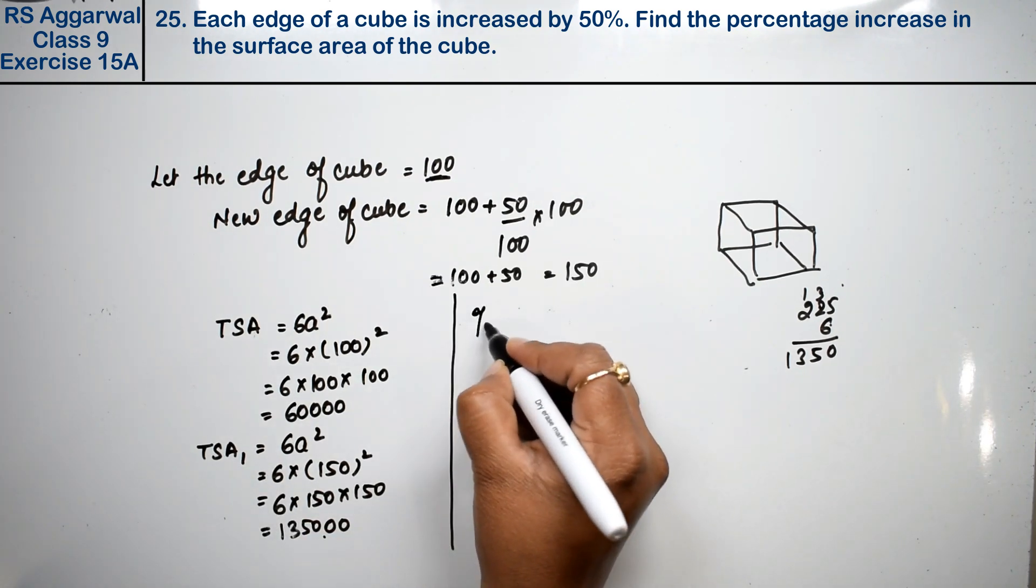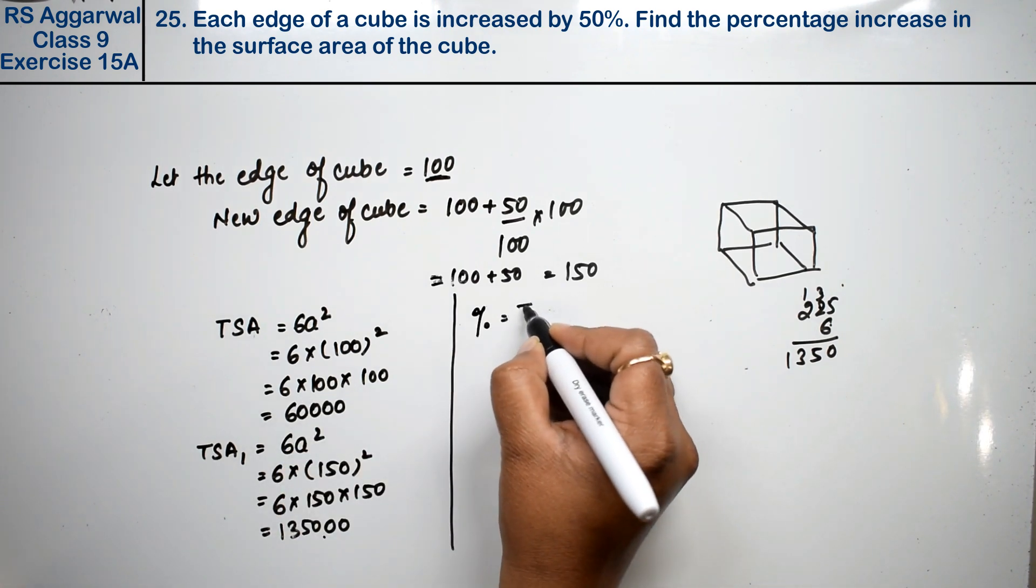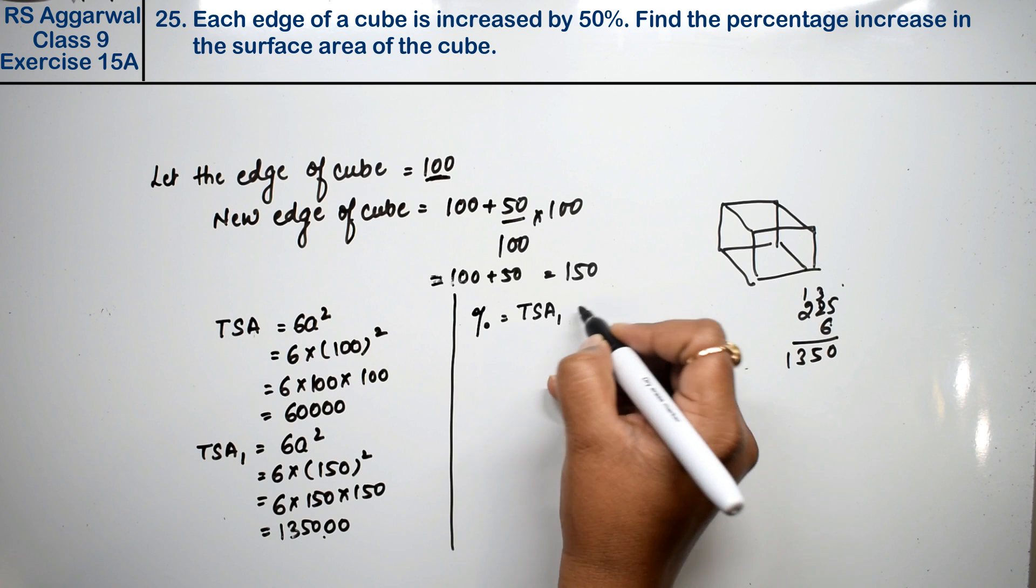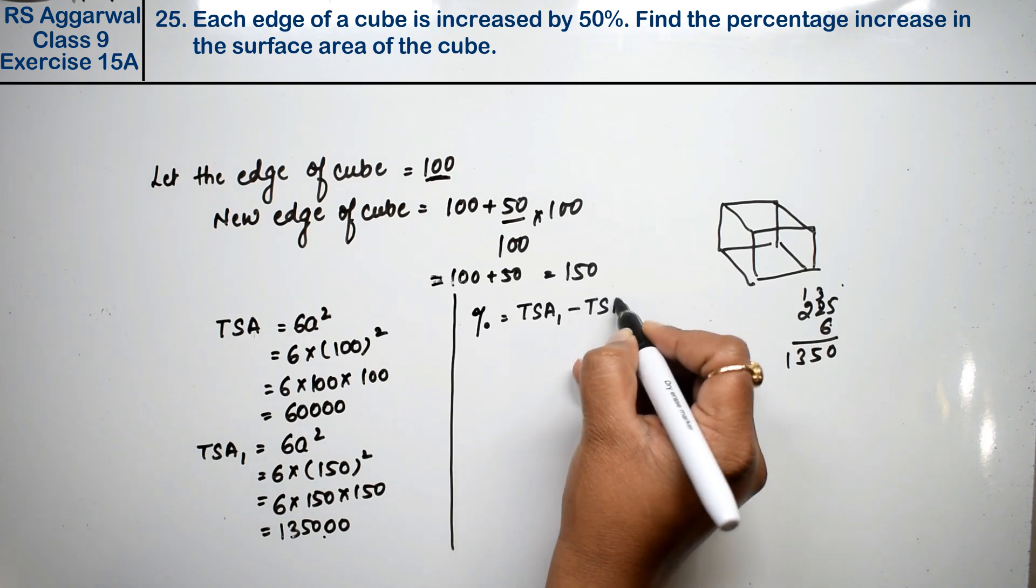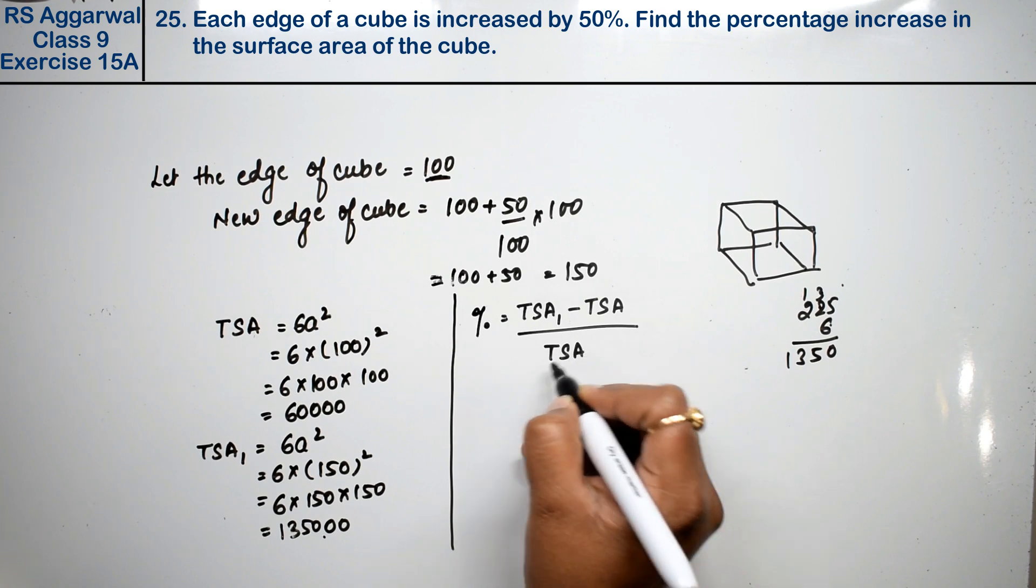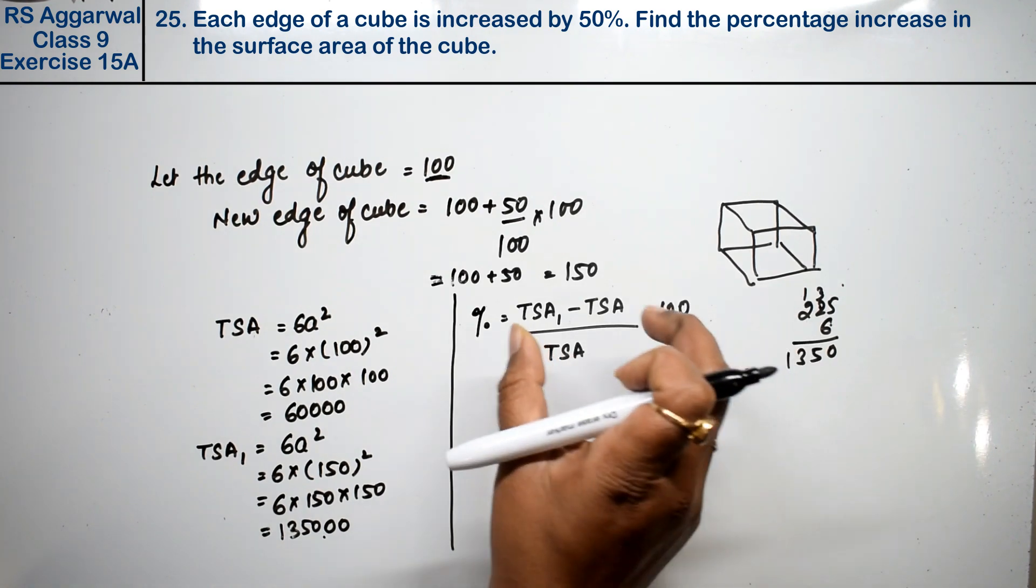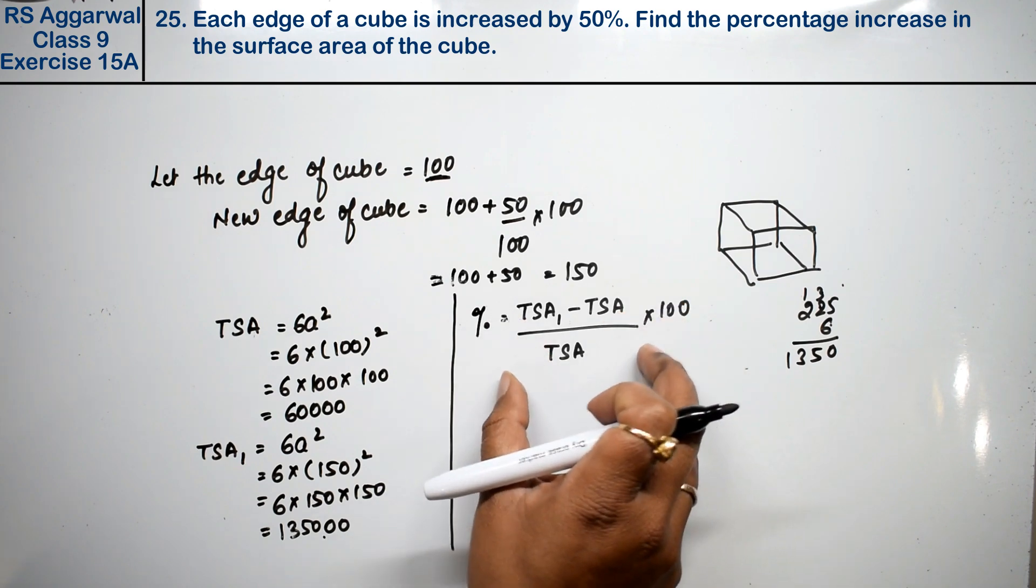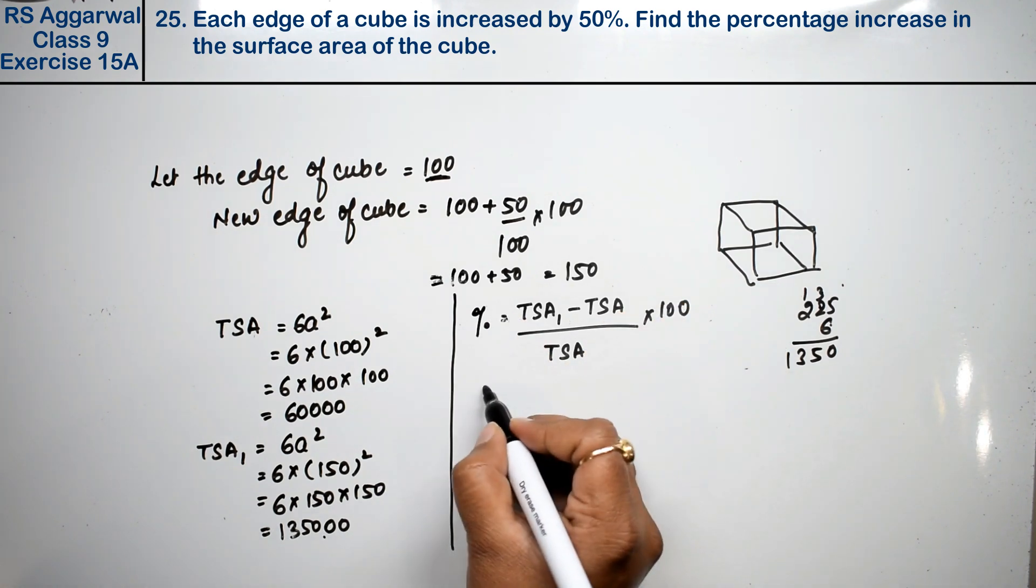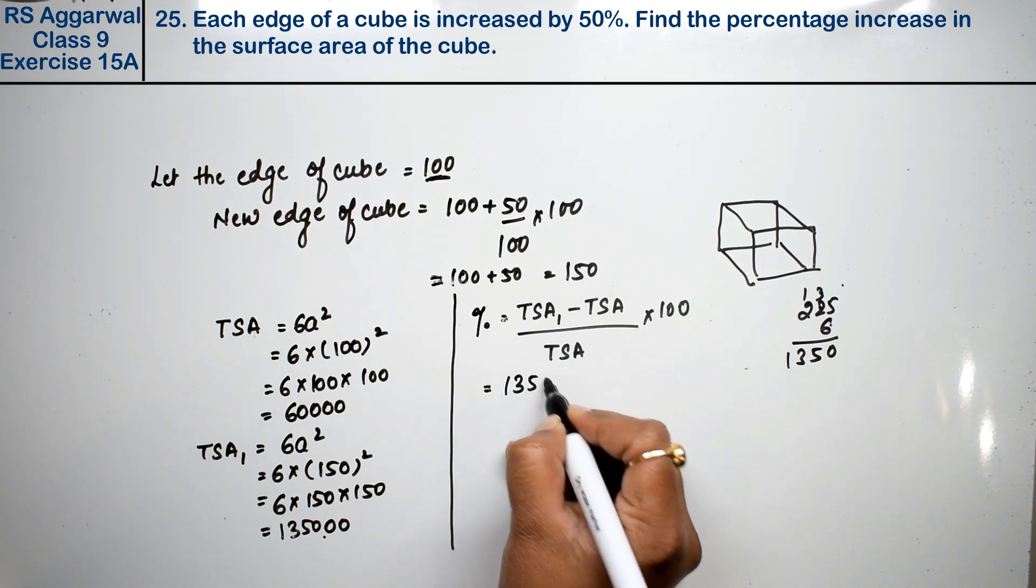Now we will take the percentage. What is the percentage? What is the formula? This is the new total surface area minus the old total surface area, the entire quantity divided by the old total surface area.